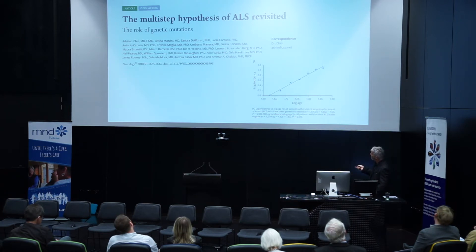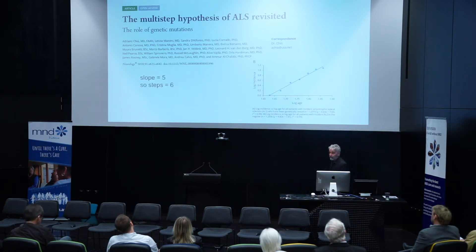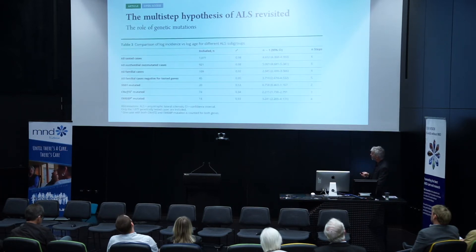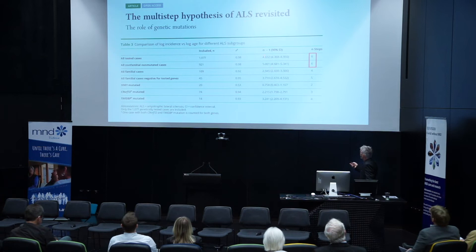The last study they did, published this year, used another register and again they got a straight line. As with the previous registers, the slope was five, meaning six steps. They went one stage further and divided cases into familial and non-familial. What they found is that in all cases and all sporadic cases, the number of steps was six — slope of five, steps of six.